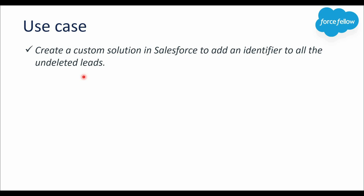It may seem like a very simple use case, but believe me, it is not that simple and you will definitely learn lots of new things while completing this. The first question you might have is: what does it mean by identifier? An identifier here means a unique value which can help us to know whether this lead was restored after deletion or not.